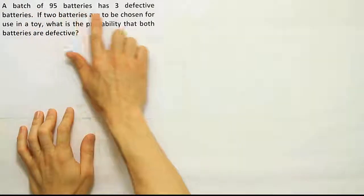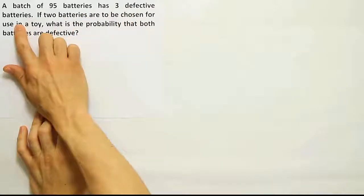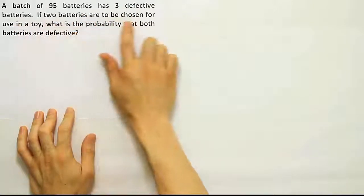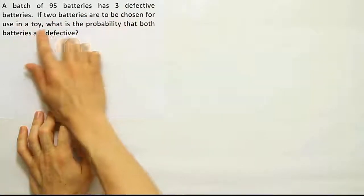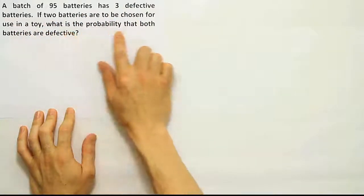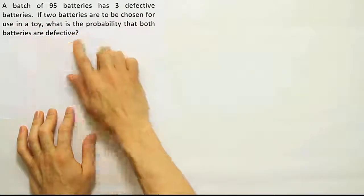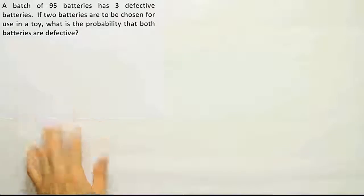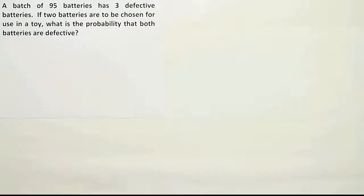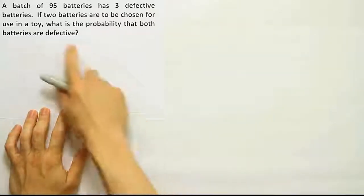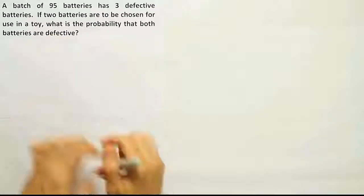A batch of 95 batteries has three defective batteries. If two batteries are to be chosen for use in a toy, what is the probability that both batteries are defective? When I read this problem, I see that it's the multiplication rule of probability right away.